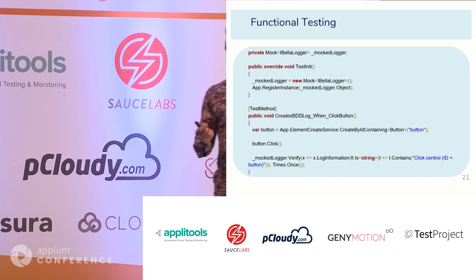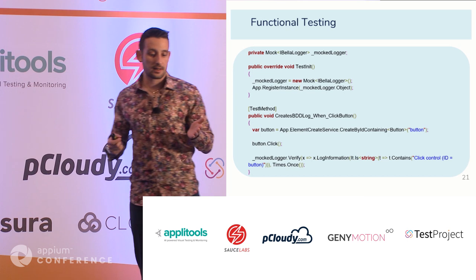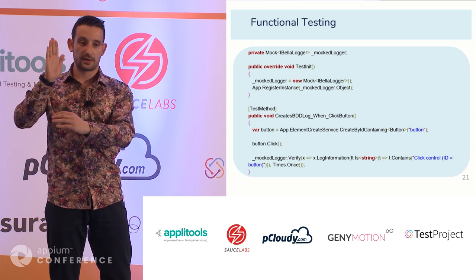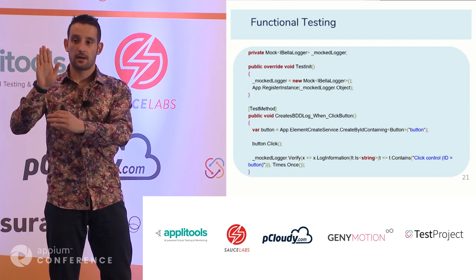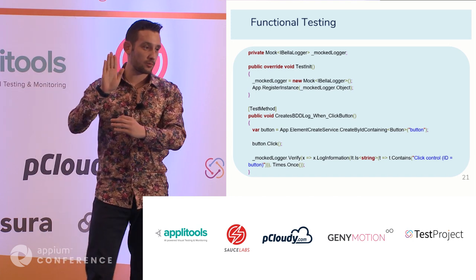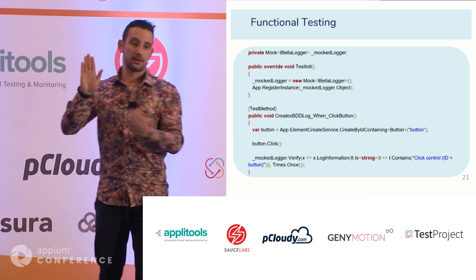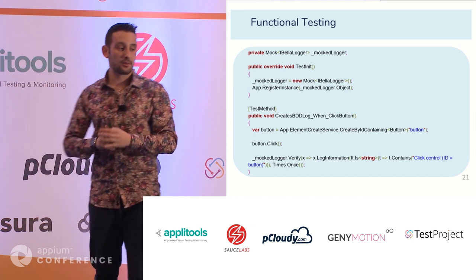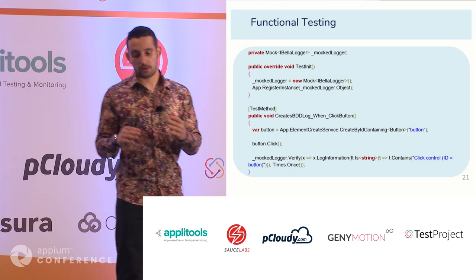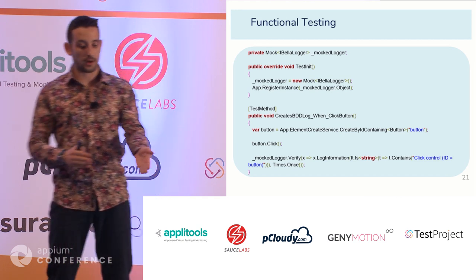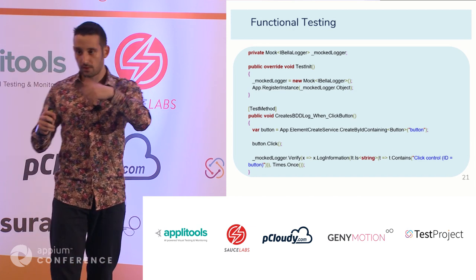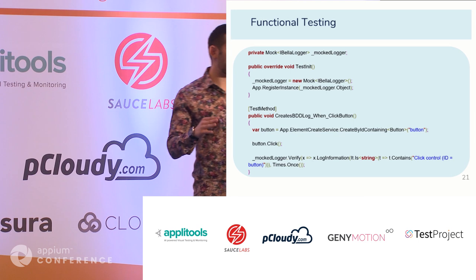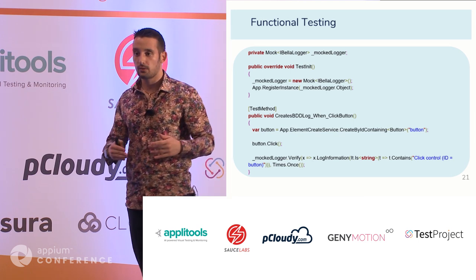Another thing we do — here's an example for Android. If you search for an element in Android and the element is not visible on the screen, your test will fail without custom code. There is custom code using Appium that scrolls down or up until it finds the element on screen. We developed the framework to hide this complexity, allowing users to just write 'create by ID containing' and the framework does the scrolling automatically. This is custom low-level Appium code under the hood that we need to verify. So we have a test where we know the element is below the visibility point and verify that it becomes visible.